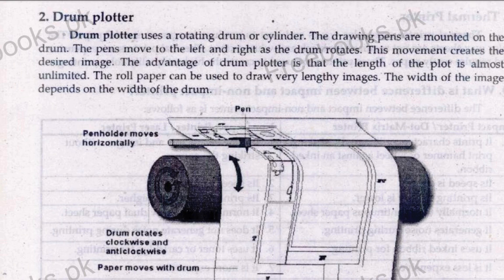The advantage of drum plotters is that the length of the plot is almost unlimited — as I mentioned, like tissue paper or a roll. After the pattern, the paper moves forward. This is one advantage: you get unlimited length. That means you can print as much length as you want — like banners and other large printing — you can keep it as long as you need. Roll paper can be used to draw very lengthy images.